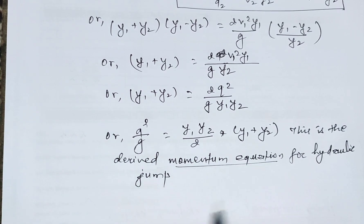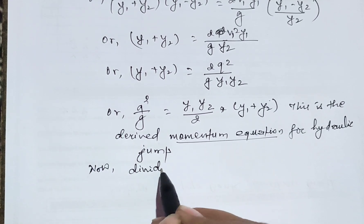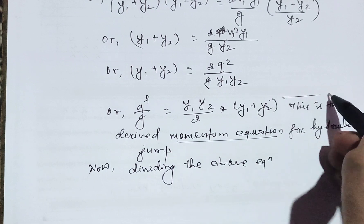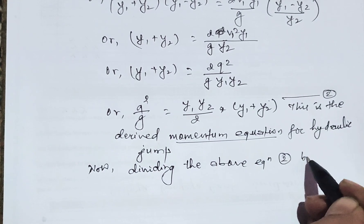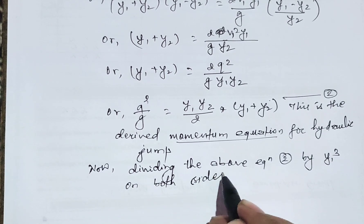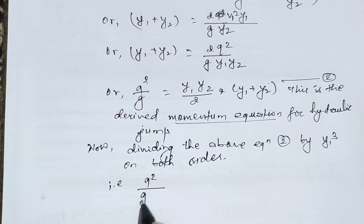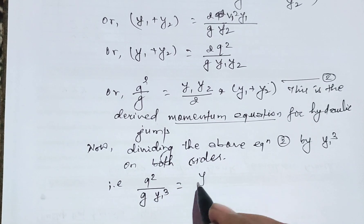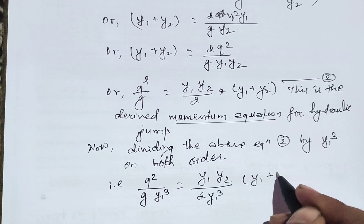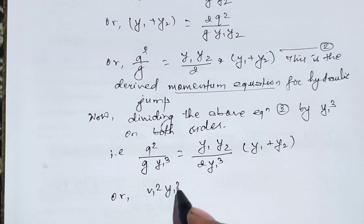Now again dividing the momentum equation by y1 cubed on both sides: q² divided by g·y1³ equals y1·y2 divided by 2·y1³ times (y1 plus y2), which simplifies to q² divided by g·y1³ equals y2 divided by 2·y1² times (y1 plus y2).